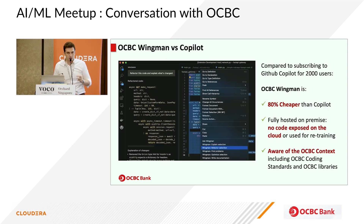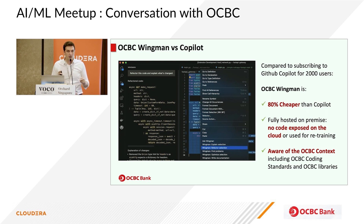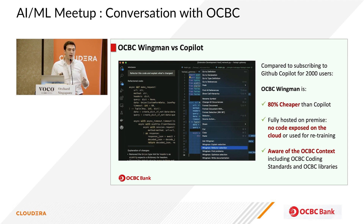For 2,000 users, Wingman is five times cheaper than Copilot. It's fully hosted on-prem, so we have no risk of leaking any data to the cloud. Most importantly, it is aware of OCBC context — when I say 'right-click and refactor the code,' I'm not just saying refactor the code generically; I'm saying refactor the code to OCBC standards and policies. I can do that because I own the model, I own the prompt, and I own the extension. Through the prompt I can pre-inject examples of what the OCBC standards look like.